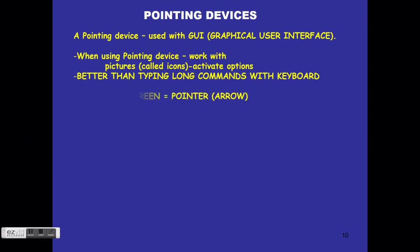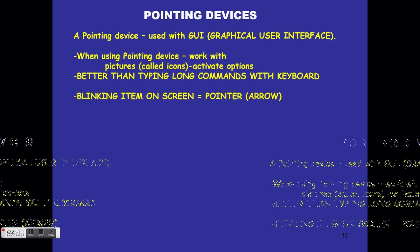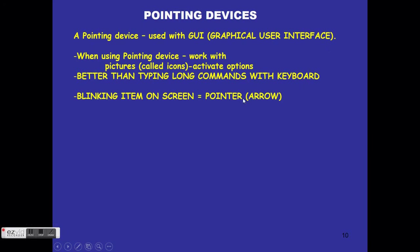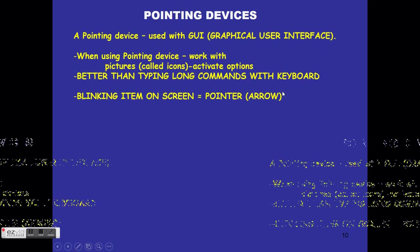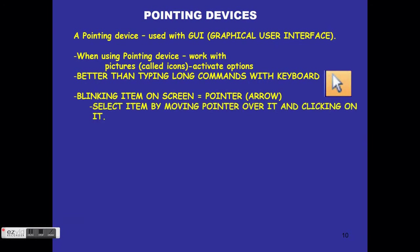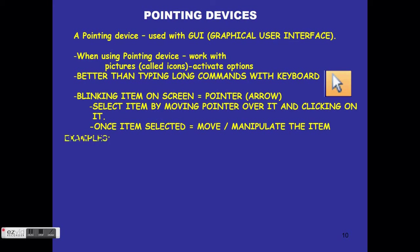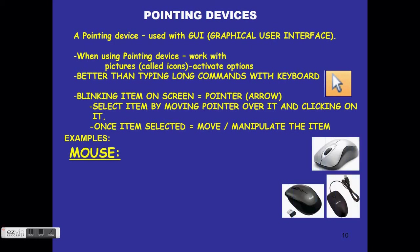The blinking item on the screen that moves around is called your pointer, and it mostly looks like an arrow. You select an item by moving the pointer over it and clicking on it, thereby activating an option. Once the item is selected, you can move or manipulate it.